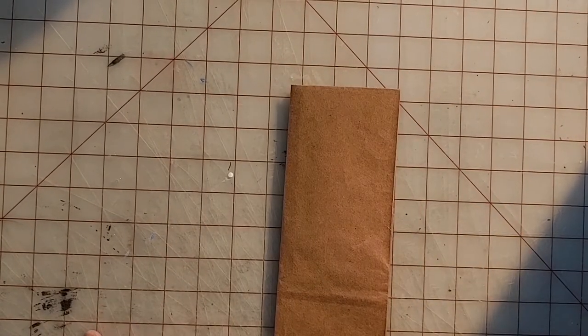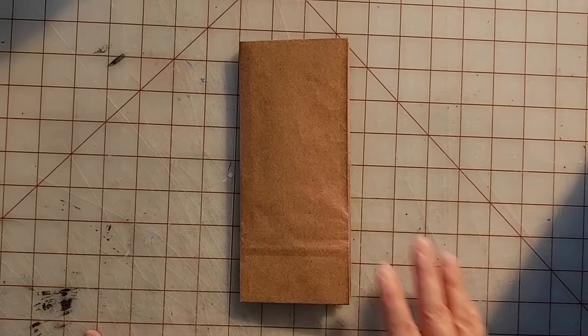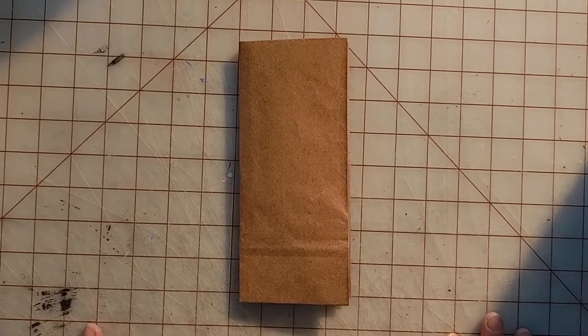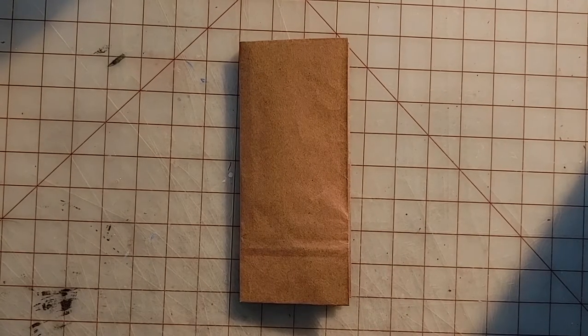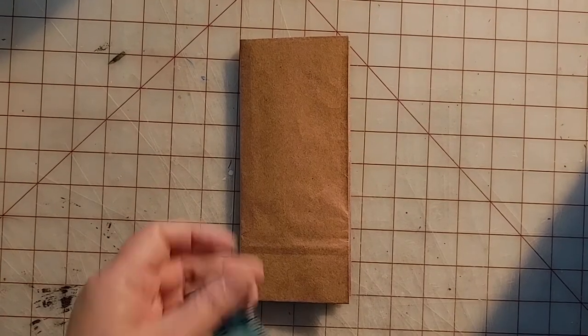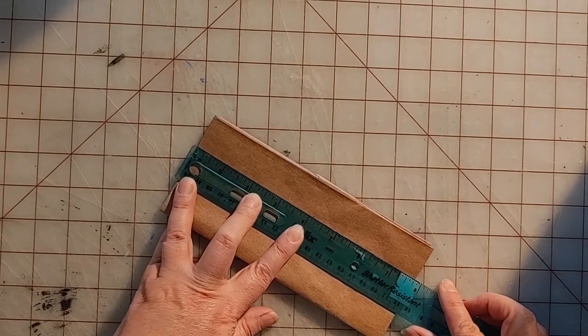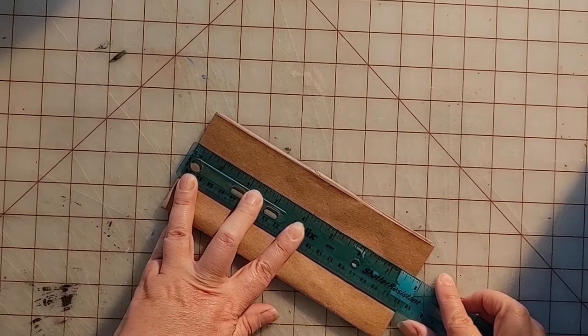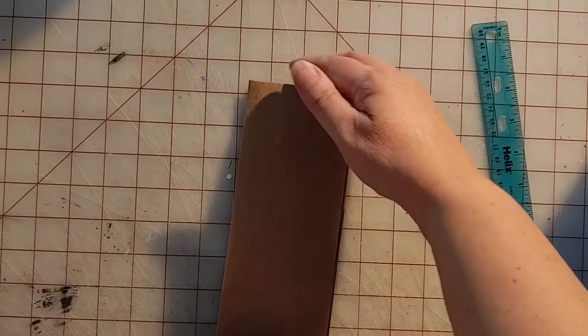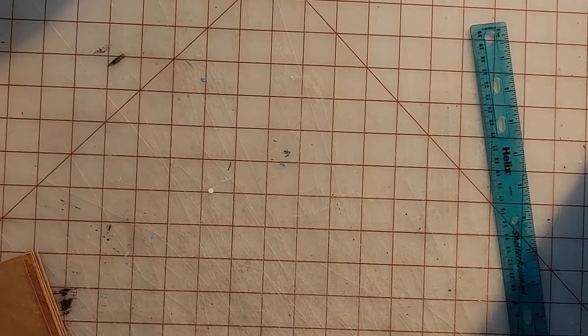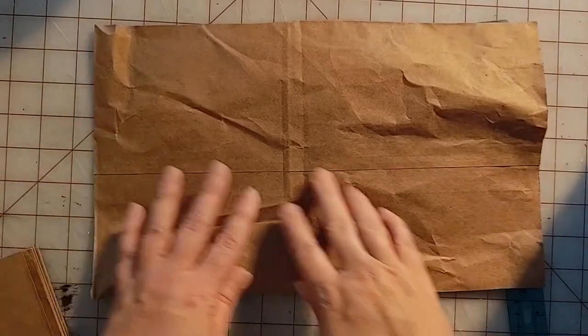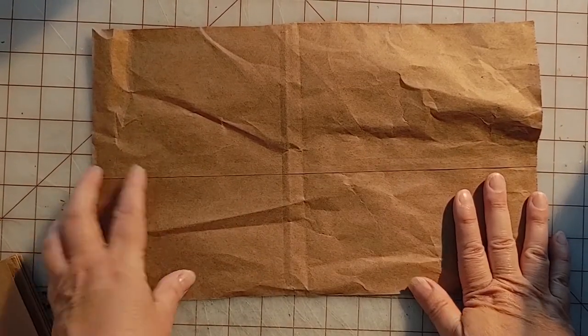Now because we didn't fold precisely and we may all not have started out with the same bag, at this point we need to do some measuring. So I need to measure the height of my book, mine is seven and three quarters, and I'm going to cut the piece of bag that I saved to that height.